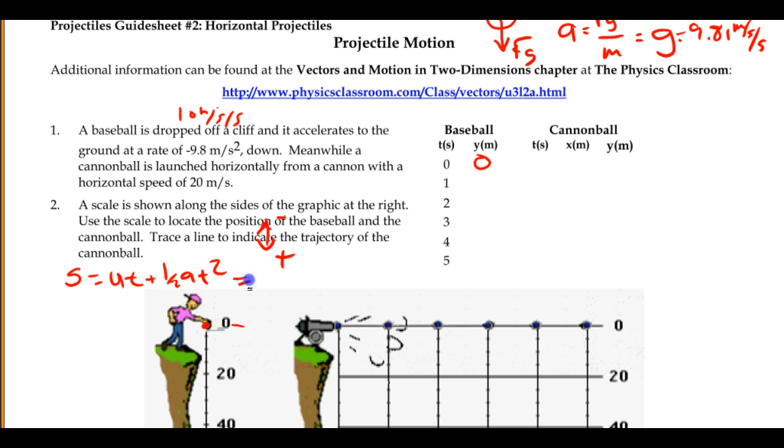For our particular case, he's dropping that ball, so the u is 0, so the ut part will drop out. We have 1/2 of the acceleration times time squared. And also in our case, the acceleration is, because we're in free fall, the acceleration due to gravity. So it's 1/2 of 10 meters per second per second times t squared, which 1/2 of 10 is 5. So it's essentially 5 meters per second squared times t squared.